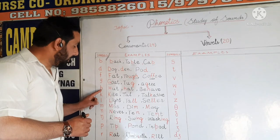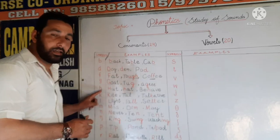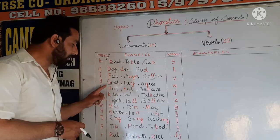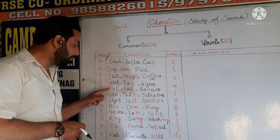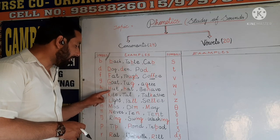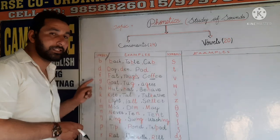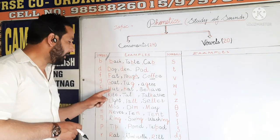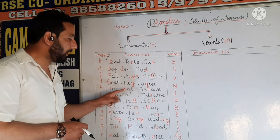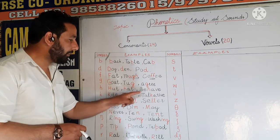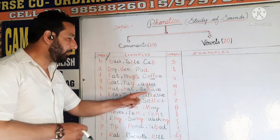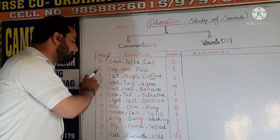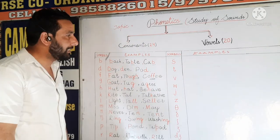Next is H. For example, in 'hot', the sound that we produce at the initial stage is the sound of this consonant symbol H. Next is 'hat' — the initial sound is H. And 'behave' — the sound we produce here is the sound of this phonetic symbol H.